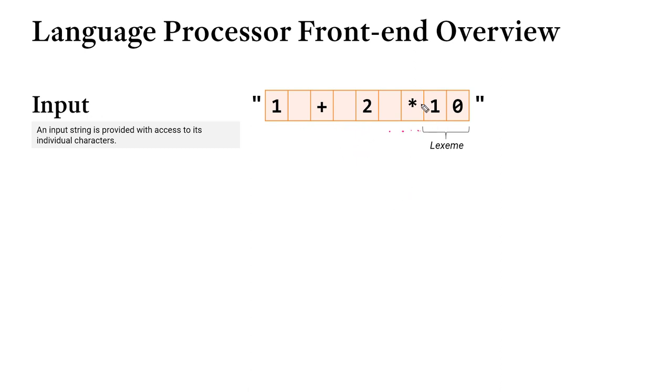Our goal is to try and break this input into what we call lexemes, which are units of meaningful character data. For example, we could consider these two digits together to be a single lexeme that is the number 10. We could consider the asterisk here to be a lexeme, which might be the multiplication operator.